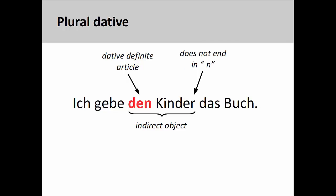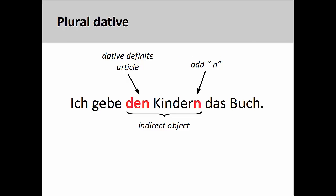This sentence, 'Ich gebe den Kindern das Buch' — I give the book to the children — presents us with a problem. If a plural noun is in the dative case and does not end in 'en', then we need to add 'en' to the noun: 'Ich gebe den Kindern das Buch'. You will need to do this to every plural noun in the dative case that does not end in 'en'.